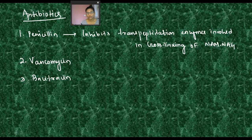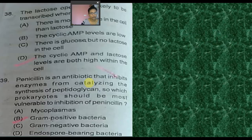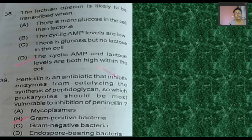Penicillin is commonly used as an antibiotic. It works by inhibiting the transpeptidation enzymatic reaction, which is responsible for synthesizing peptidoglycan. So the enzymes are inhibited and the peptidation reaction cannot proceed. A 2018 exam question states: penicillin is an antibiotic that inhibits enzymes from catalyzing the synthesis of peptidoglycan.